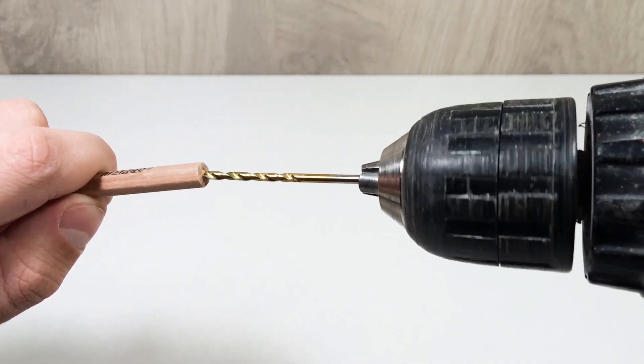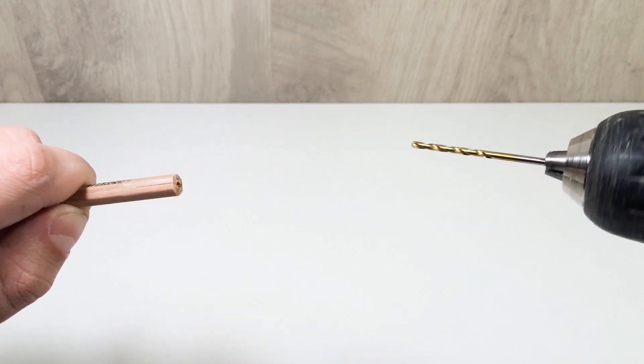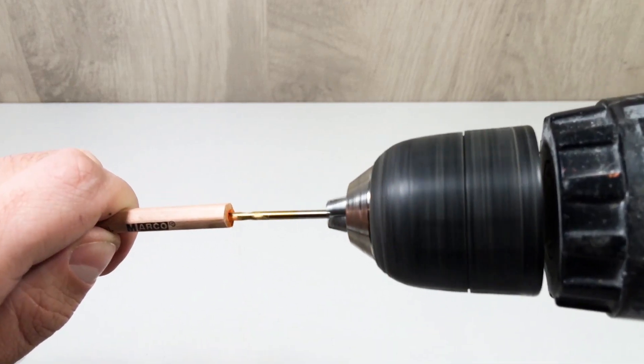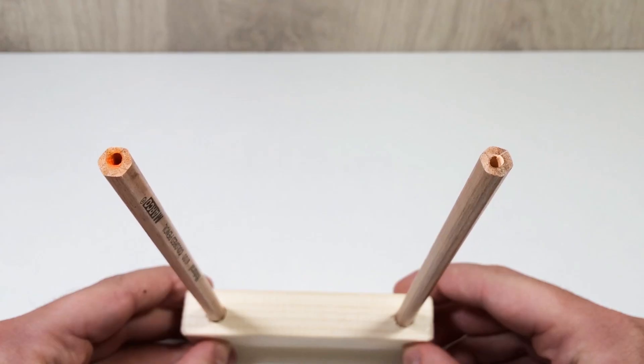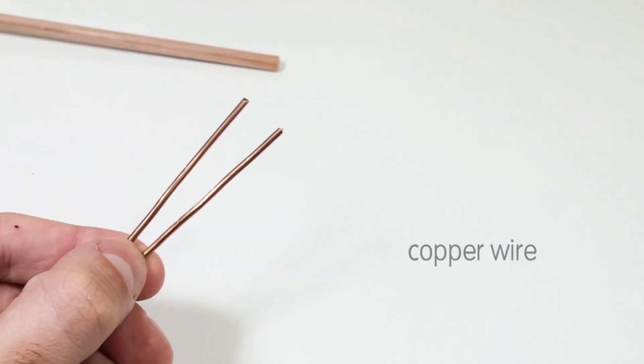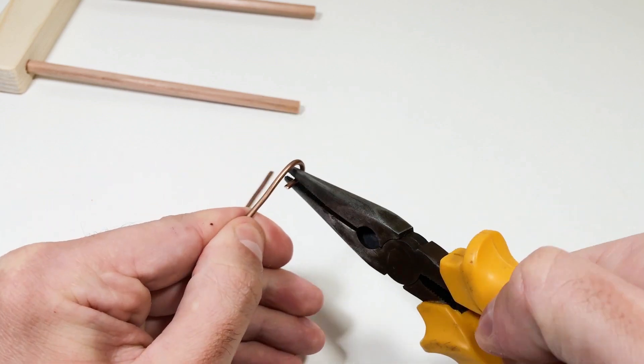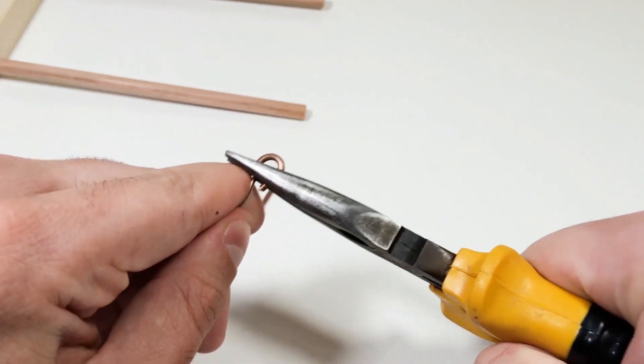Near the top of each pencil, drill a small horizontal hole. This is where we'll insert copper wires to connect the heating wire. Cut two short pieces of copper wire, about four to six inches each. Bend small loops at the ends of each wire. These loops will help us attach everything neatly.